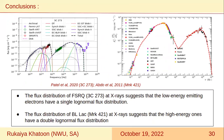Here I show the broadband SED of FSRQ 3C273 (from Türler et al. 2020) and of MKN 421. For the FSRQ, the X-ray spectrum lies before the synchrotron peak, suggesting X-ray emission is associated with the low-energy end of the electron distribution. For the BL Lac, the X-ray emission lies beyond the synchrotron peak, suggesting it is associated with the high-energy end of the electron distribution. Therefore, the flux distribution of the FSRQ at X-rays may suggest the low-energy emitting electrons have a single log-normal flux distribution, while the flux distribution of MKN 421 at X-rays might suggest the high-energy electron distribution shows a double-log-normal flux distribution.